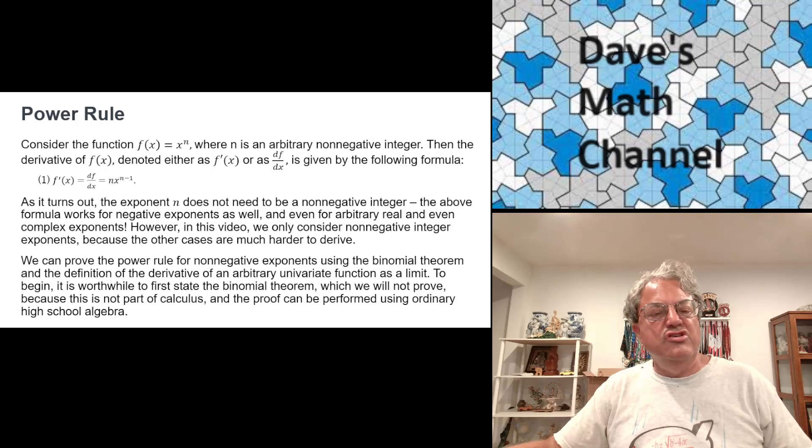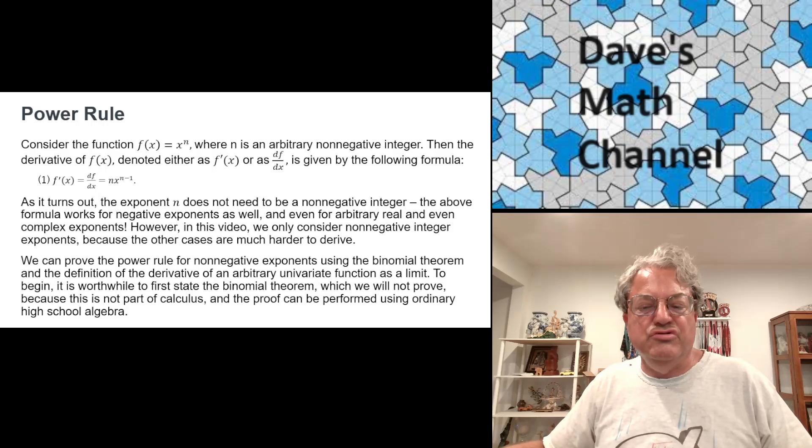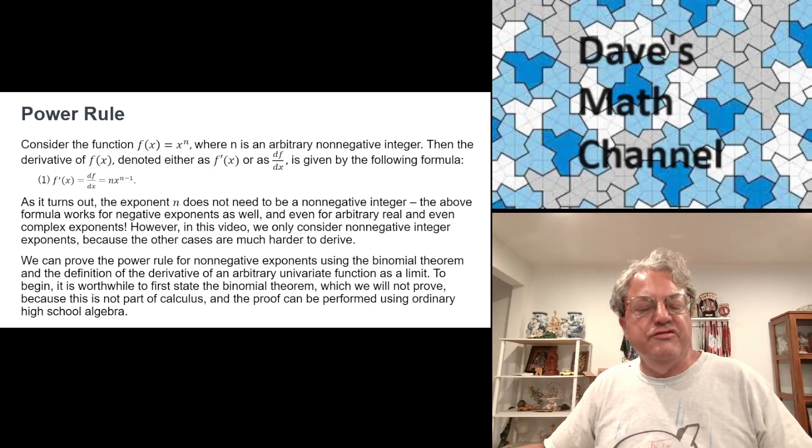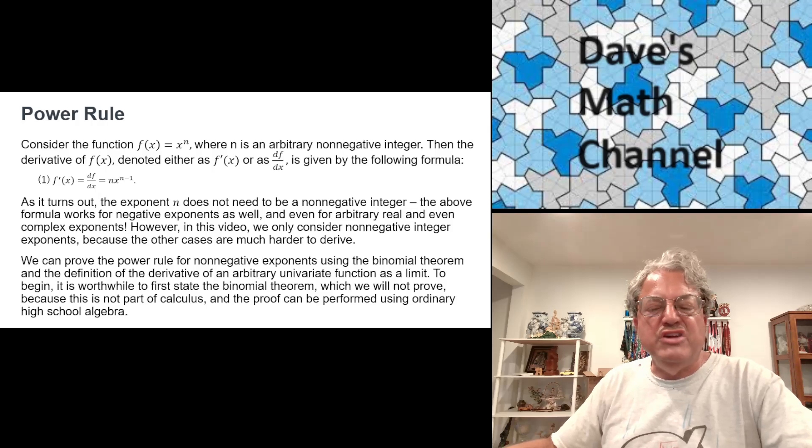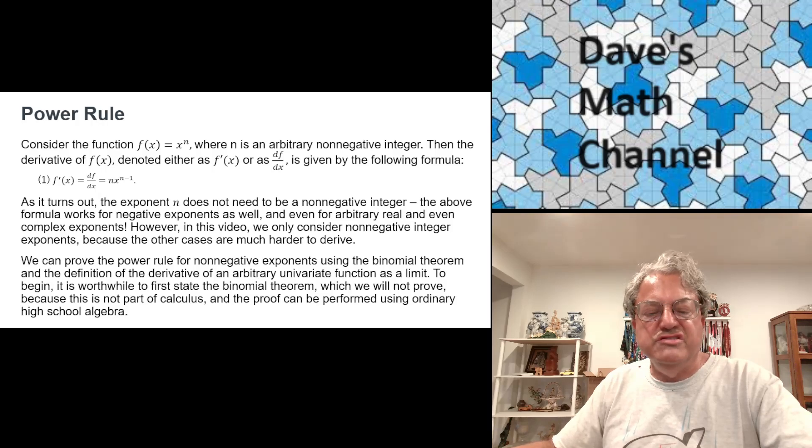I'm not going to prove the binomial theorem. This is something you probably learned in high school at some point. It's a result from high school algebra, and it's a very important result. I'm not going to derive it, I'm going to state it, but I'm not going to derive it. We're going to use the binomial theorem and we're also going to use the definition of the derivative in terms of a limit to derive the power rule.